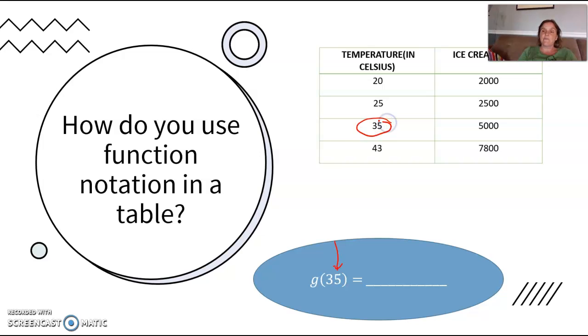So if the input is 35, the output is 5,000. In this particular example, whatever temperature it is, you're going to have the same number of ice cream sales, or at least in this table that looks like it follows the case. So on the day that it was 35 degrees, the ice cream sales were 5,000. And remember the way we read this would be G of 35 equals 5,000.